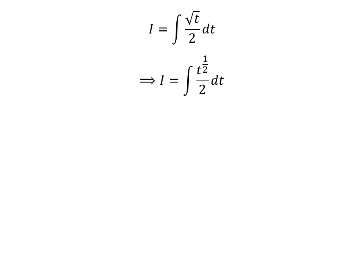In terms of exponent form, the above equation can be written as i equal to the integral of t raised to the power of one-half over 2 with respect to t. We know the integral of t raised to the power of one-half is equal to t raised to the power of one-half plus 1, divided by one-half plus 1.